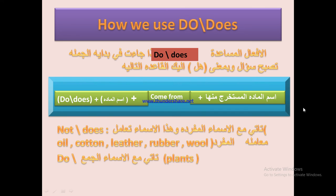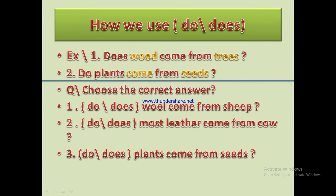Exam practice for do/does. Number one: (Does / Do) wood come from trees? 'Wood' is singular — we choose 'does'. Number two: (Do / Does) plants come from seeds? 'Plants' is plural — we choose 'do'. Exam question: (Do / Does) wool come from sheep? 'Wool' is singular — we choose 'does'. (Do / Does) most leather come from cow? 'Most leather' is treated as singular — we choose 'does'.